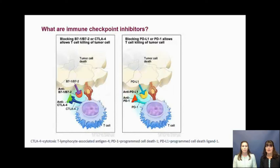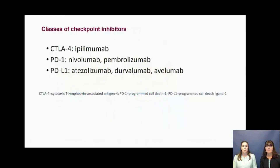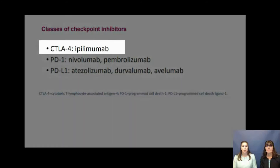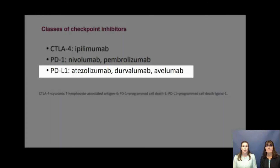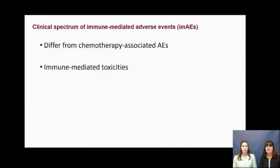Checkpoint inhibitors are monoclonal antibodies that block the negative cosignaling molecules that prevent an effective immune response, with the result being restoration of T-cell-mediated anti-tumor activity. The approved checkpoint inhibitors can be divided into three categories based on the different cosignaling molecules that they target, namely: the cytotoxic T-lymphocyte-associated antigen 4, or CTLA-4 inhibitors; programmed cell death 1, or PD-1 inhibitors; and programmed cell death ligand 1, or PD-L1 inhibitors.